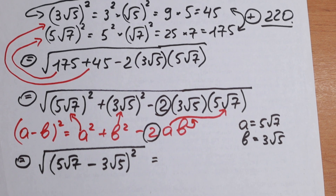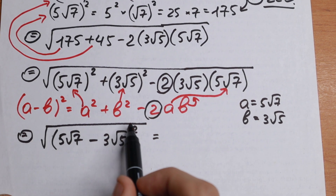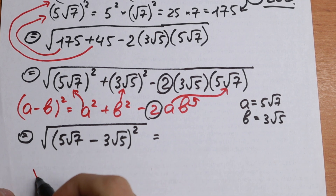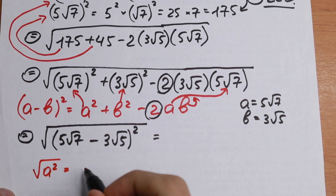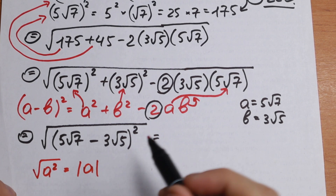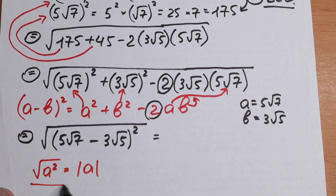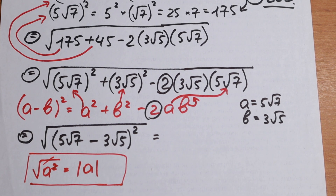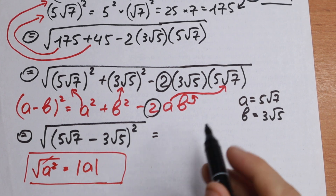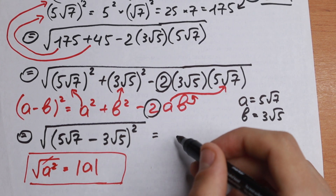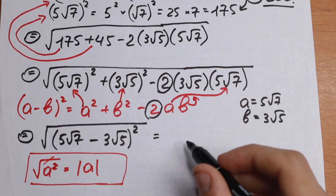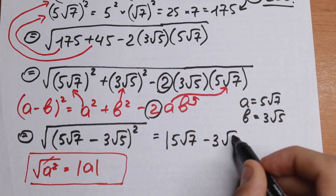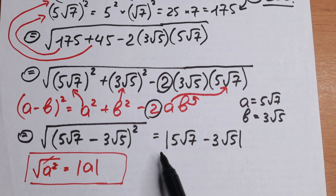Now I want to show you a really good trick. We know that we can cancel the square root sign with the square. But we need to remember the rule: the square root of a² equals the absolute value of a — this is the correct form. So applying this, we cancel the square root and the square, and we get the absolute value of (5√7 − 3√5). After all the simplifying steps, our result is the absolute value of 5√7 − 3√5.